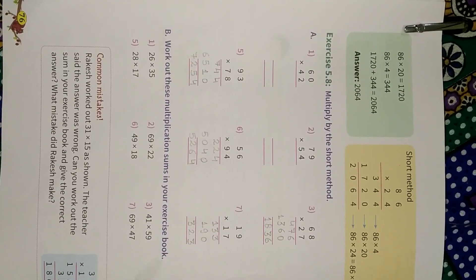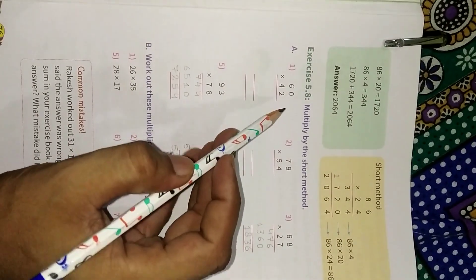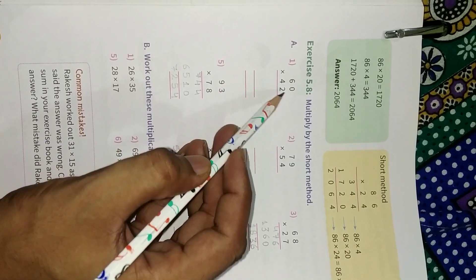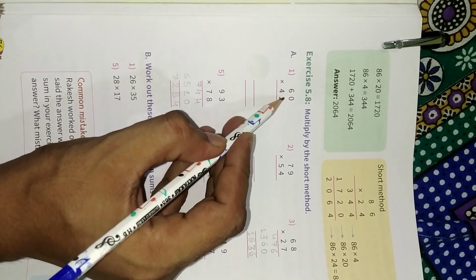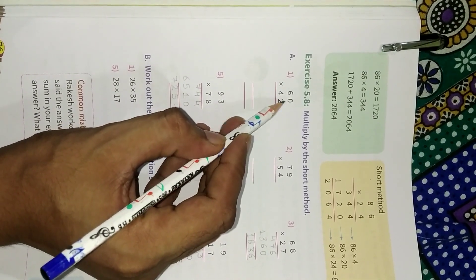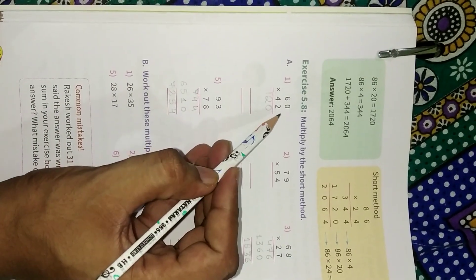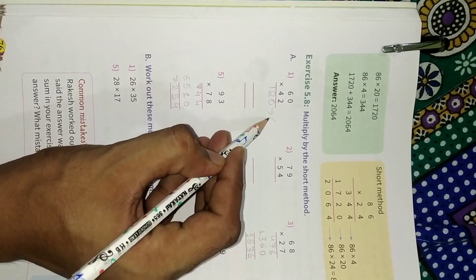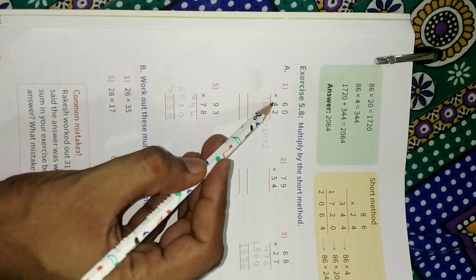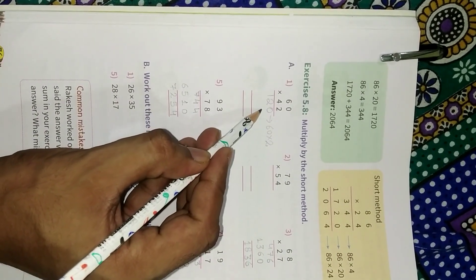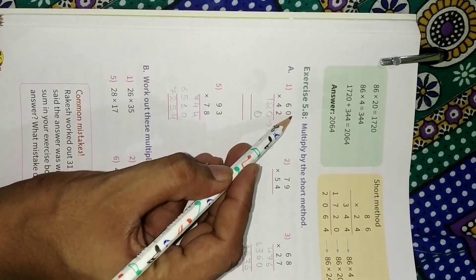Exercise 5.8 — multiply by the short method. There is another method to calculate the product of two-digit numbers. You have already done multiplication with one digit; now there are two digits. We multiply 60 by 2: 2 zeros are 0, 2 sixes are 12. After that, before multiplying by 4, we put a 0 just under the ones digit, then multiply 4 by 60.